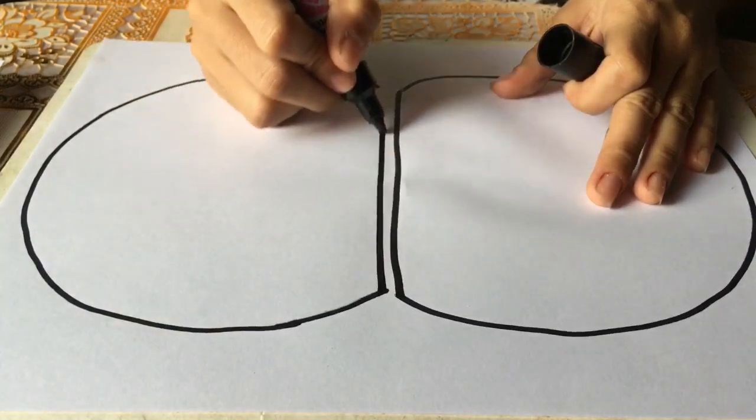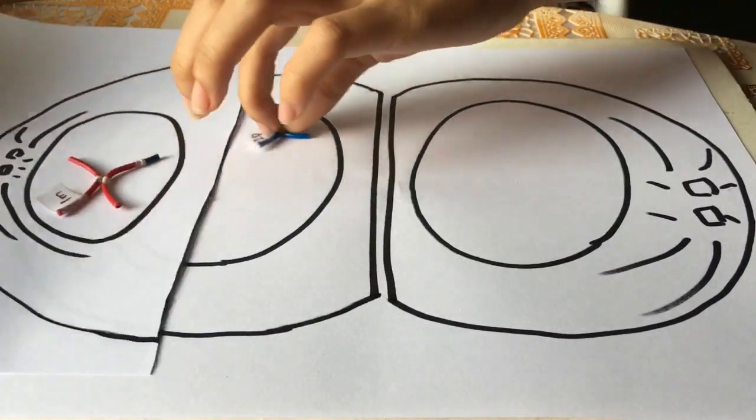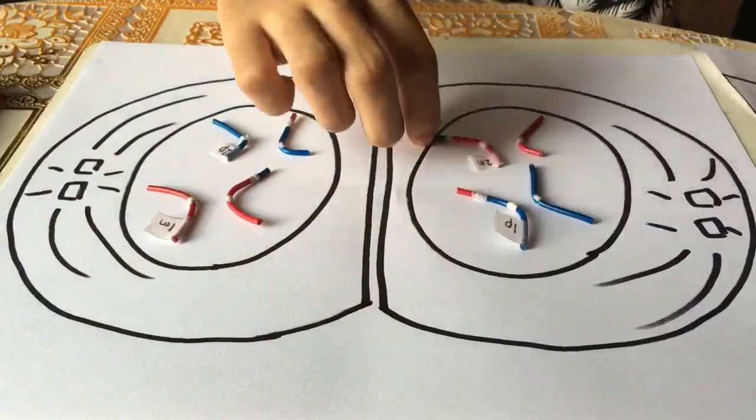In metaphase II, there are two daughter cells, each with two chromosomes. The centrioles duplicate and the meiotic spindle forms again.